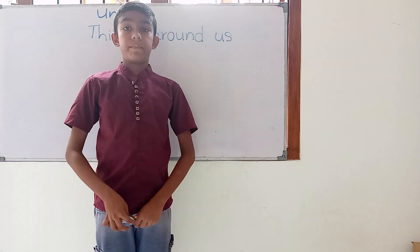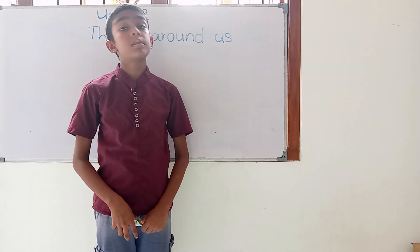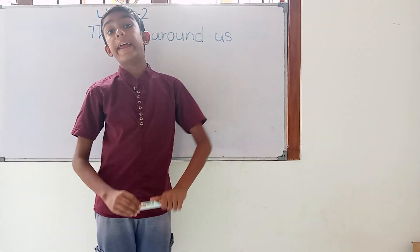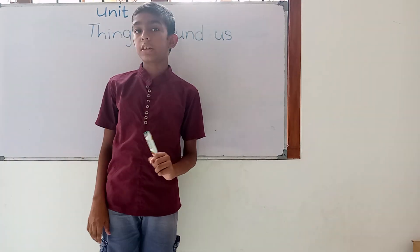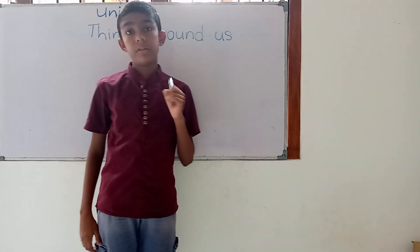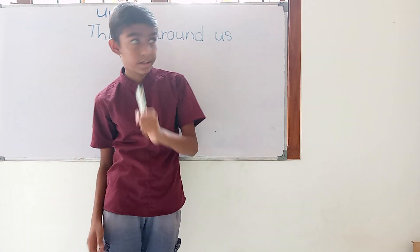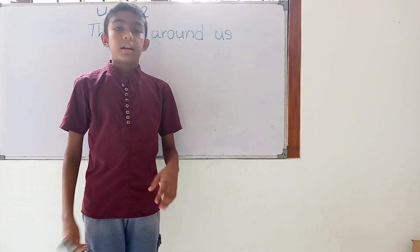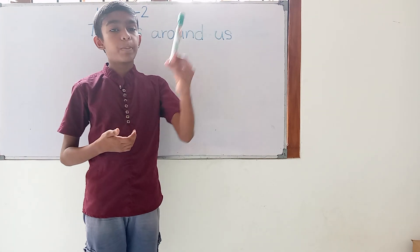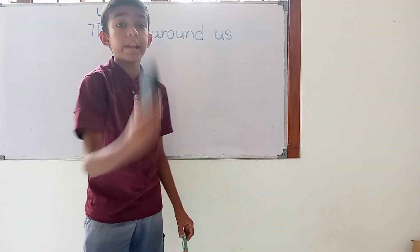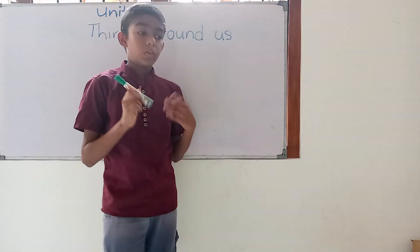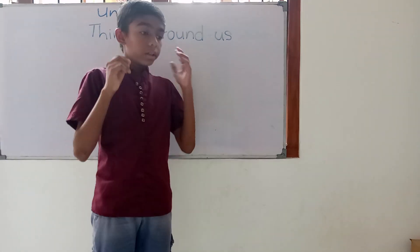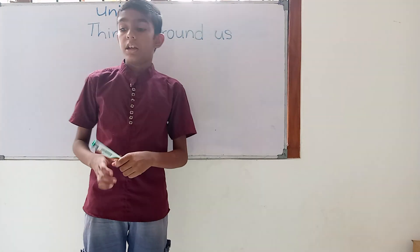Good morning everyone. I am from Advanced Smart Science class. In today's video we will be talking about the second lesson in our Grade 6 English medium science book: Things Around Us. Now, what are things around us? Well, for example, this pen, this whiteboard eraser — those are the things around us. In the first lesson we talked about the environment, but this lesson we talk about these things which are around us.